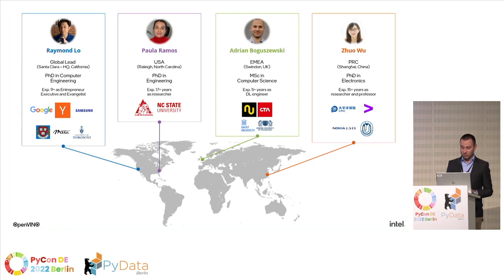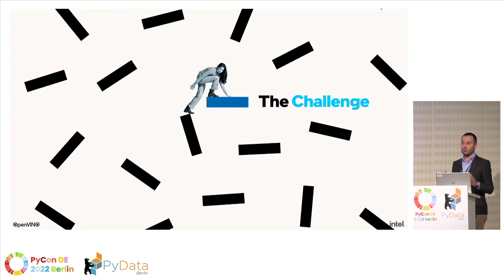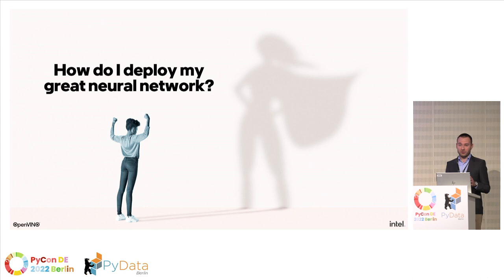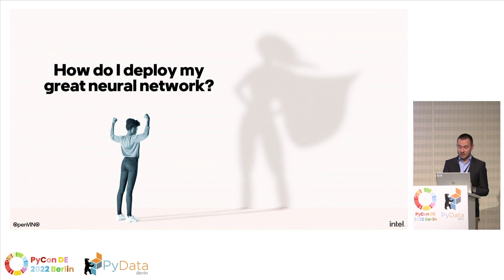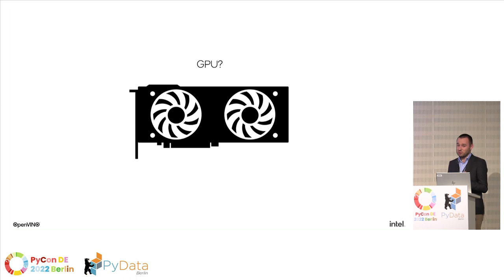First, a few words about the challenge — why do you need OpenVINO? Let's assume you've already trained a great neural network and you're sure it can save the world. But to deploy it, what's your choice? GPU? But if you only need 15 frames per second and don't want to spend a lot of money, GPU is overkill. So maybe the cloud? But then you need to build an API, rely on internet connection, and still wait for results.